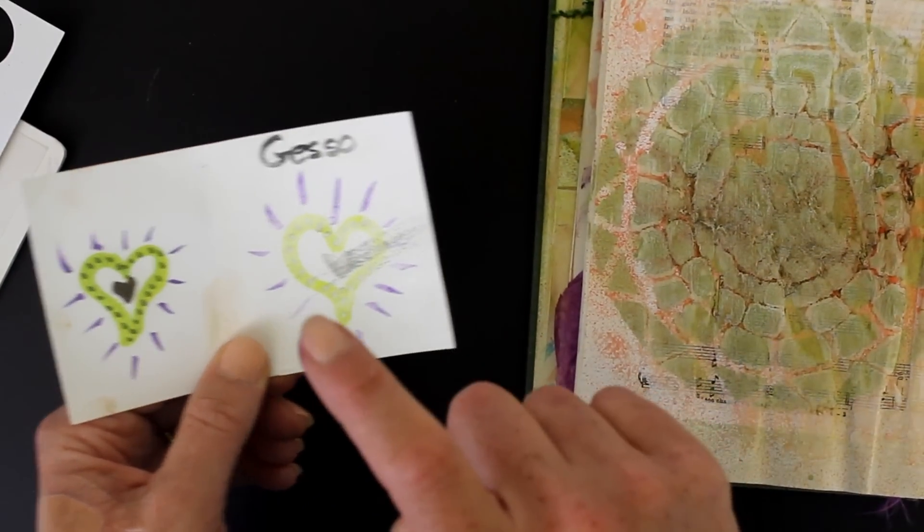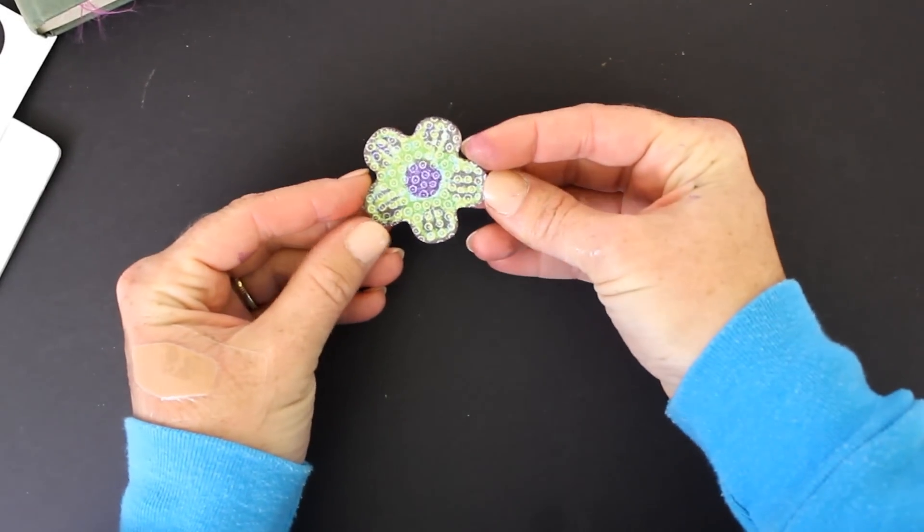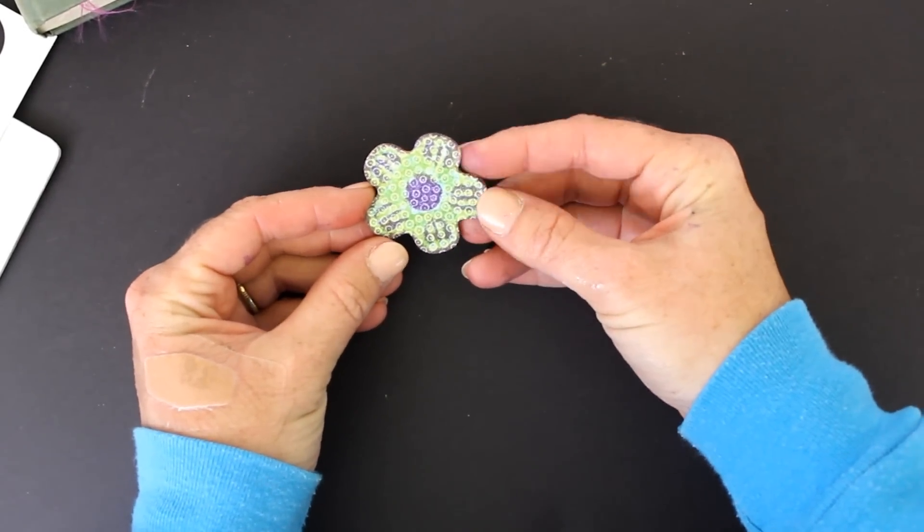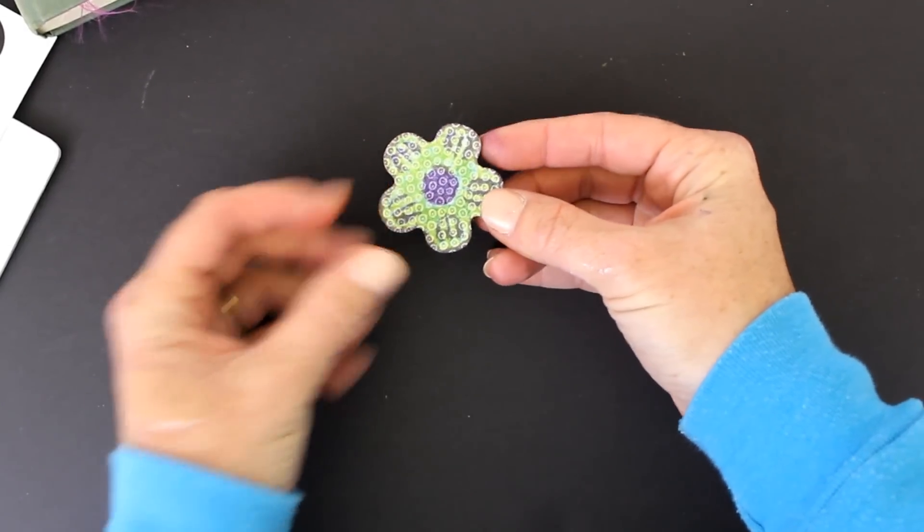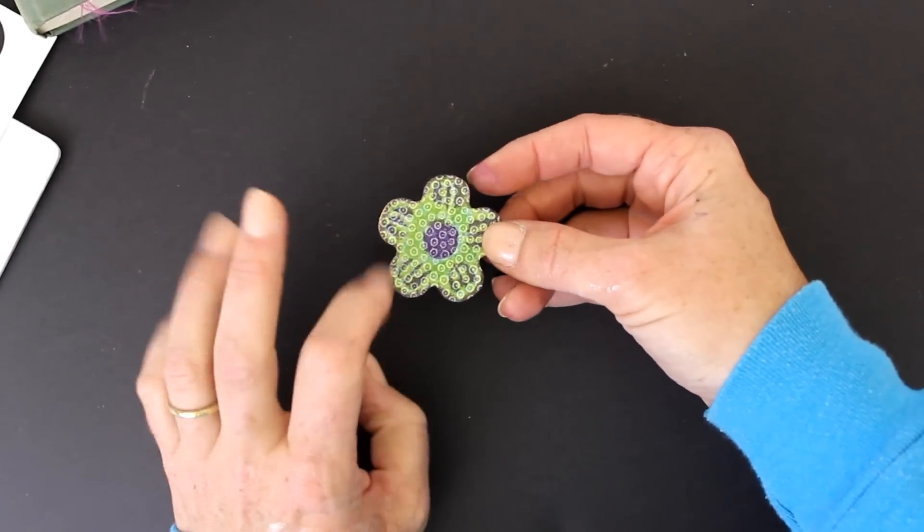I also tried it on a little piece of fabric just because I could. I figured if it would soak in—and again, a little bit of bleeding—but if you want to just add a little bit of color to maybe one of your Prima flowers, that would be a great way to do it.